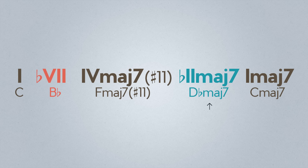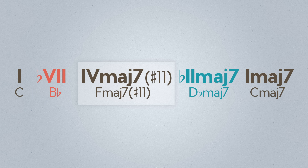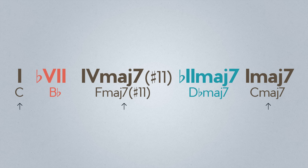Let's try borrowing one of Phrygian's chords for that progression of ours. So that was an Ionian chord progression that used both Aeolian and Phrygian modal interchange chords. We can make this stuff as complex or as simple as we want.